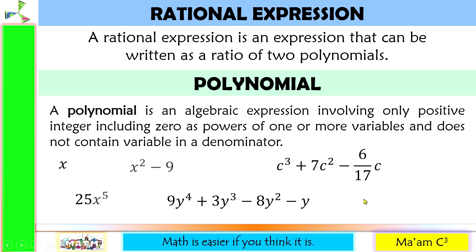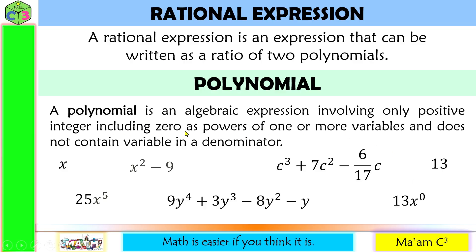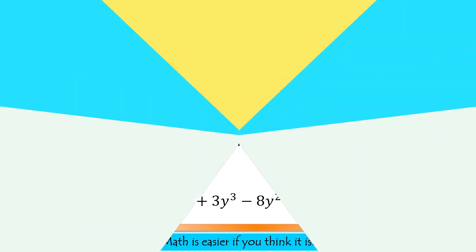Now how about just a constant — is it a polynomial? Constants are polynomials of degree 0. They are one term only that does not have a variable. Constants are polynomials too. For example, 13 times x raised to 0 — it says including zeros as powers of one or more variables, so this is a polynomial. And since x raised to 0 equals 1, this becomes 13, which is just a constant and is considered a polynomial.